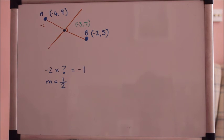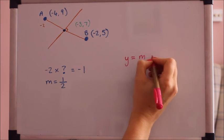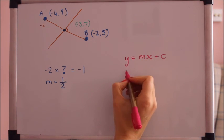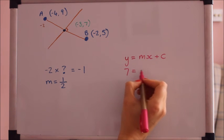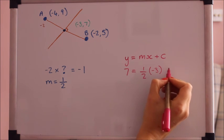Okay we've got the gradient and we've got a point that it goes through so we're in a good position to get the equation of that straight line. Again using y equals mx plus c: y is 7, m is a half, x is minus 3 and we don't know c.